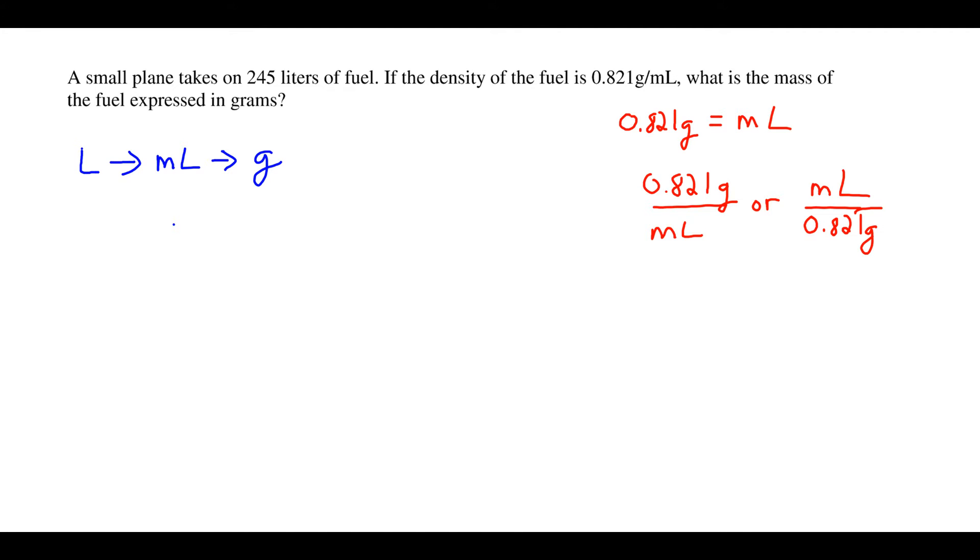We're going to do this conversion involving density. Density is going to be used as a conversion factor. We're given that the density of the fuel is 0.821 grams per milliliter. What that means is 0.821 grams is equivalent to a milliliter, so we're going to use one of these two forms of the conversion factor.